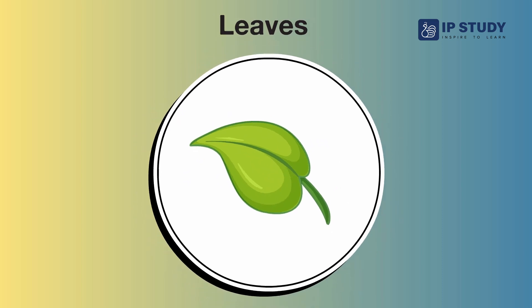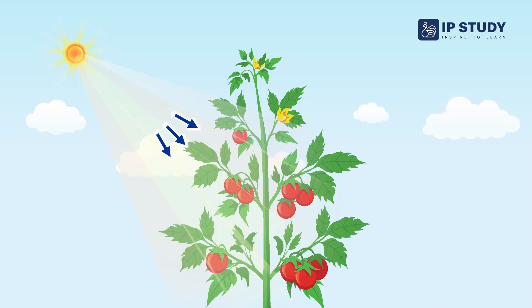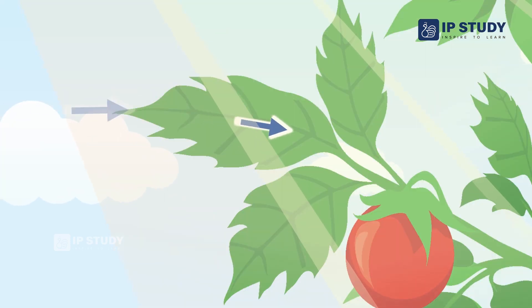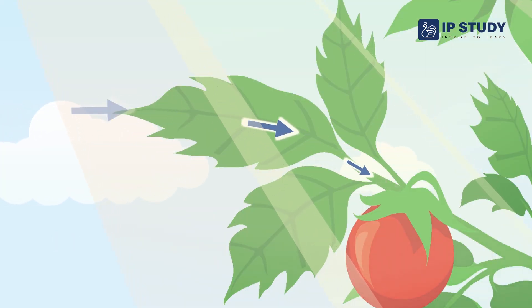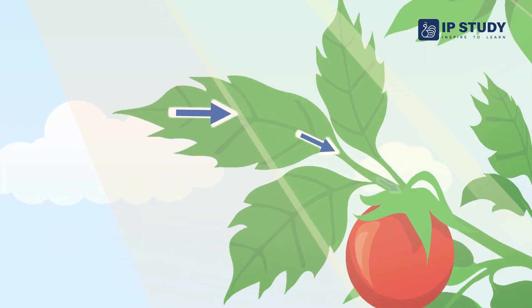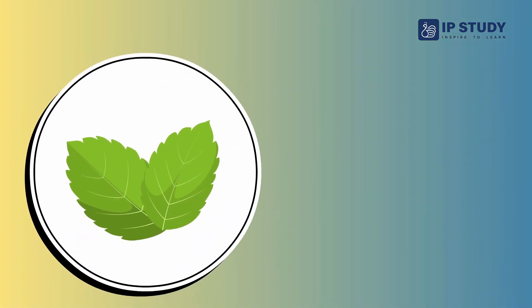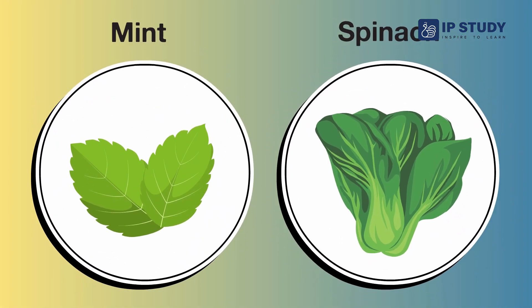Leaves. Leaves use sunlight, water and oxygen and make food for the plant. Most leaves are flat and green. Some examples of leaves we eat are mint and spinach.